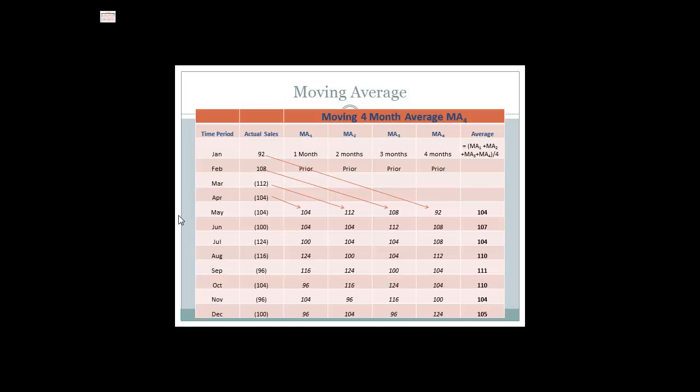Here is an example of a four month moving average. The latest four months are averaged together. Notice when we move from May to June, the data switches, so we drop off one data point and enter another.